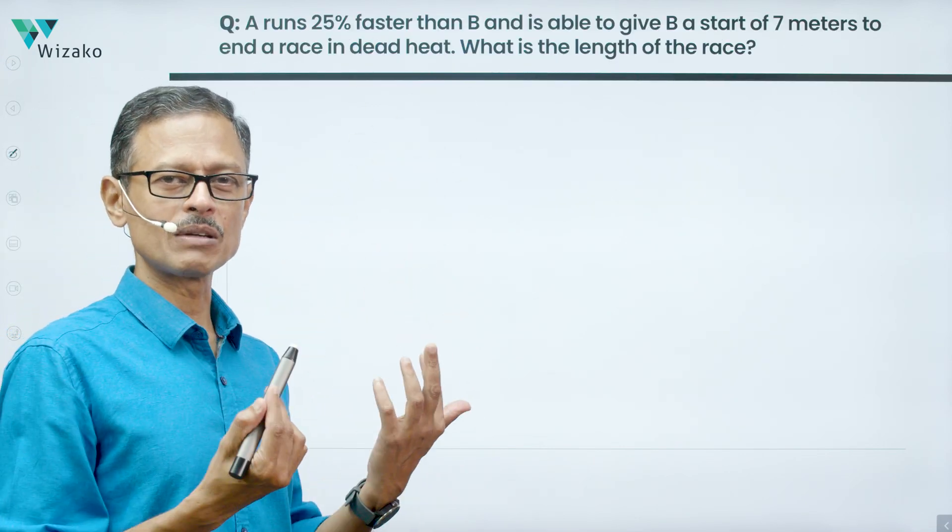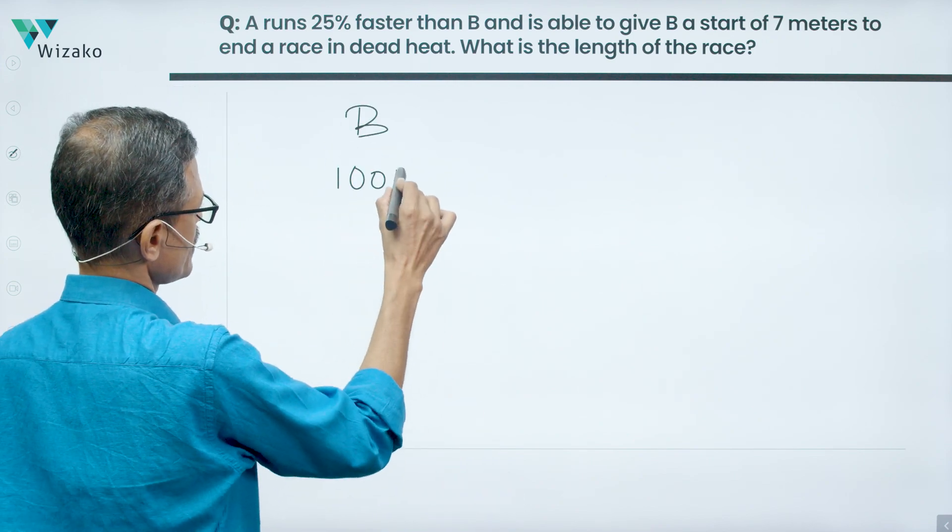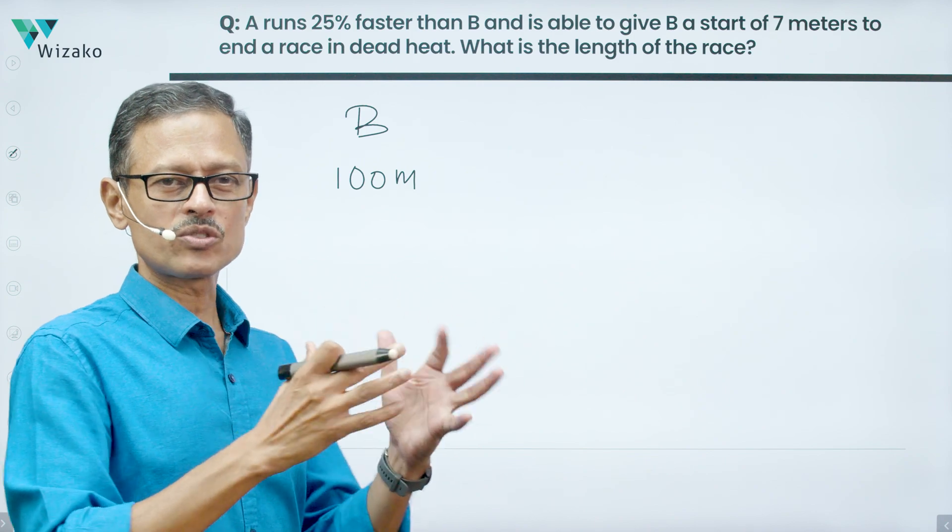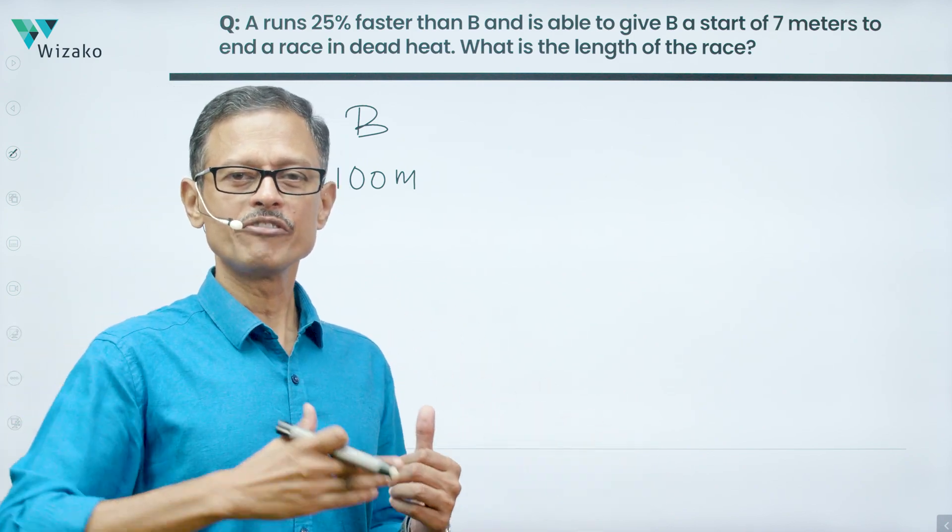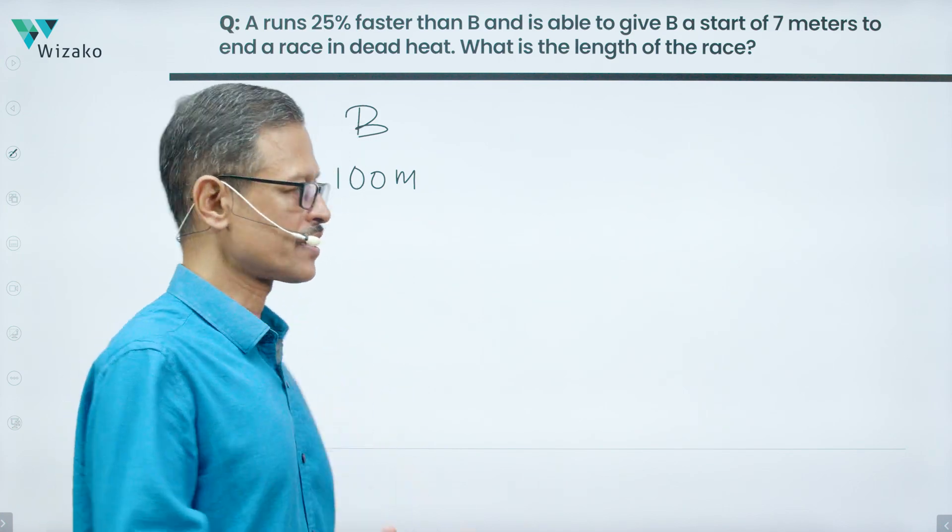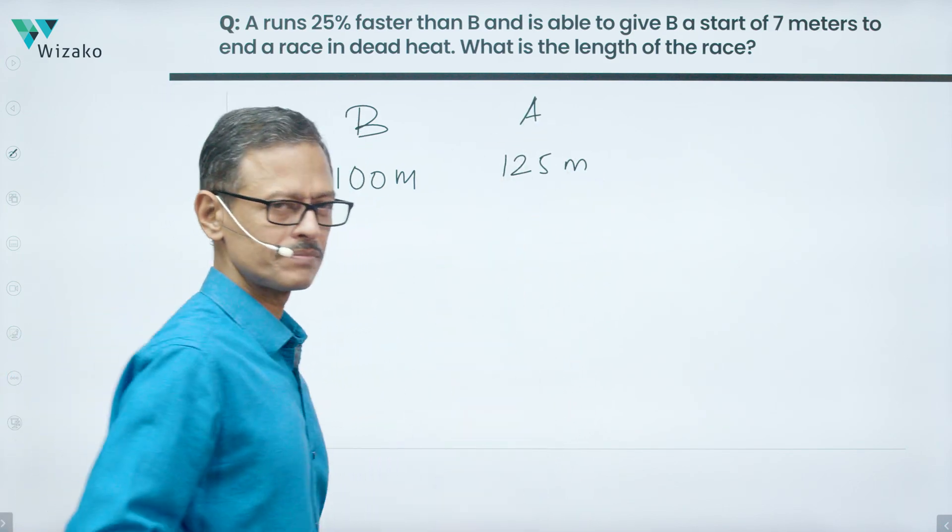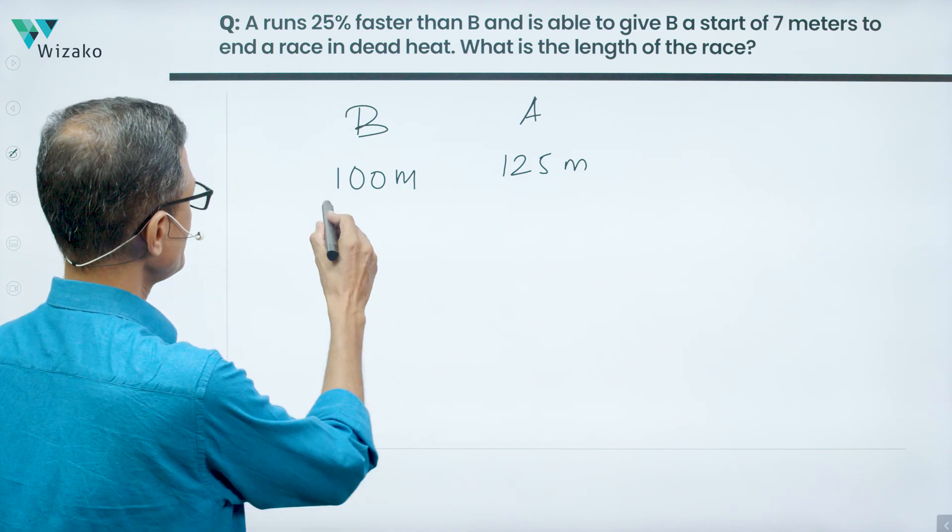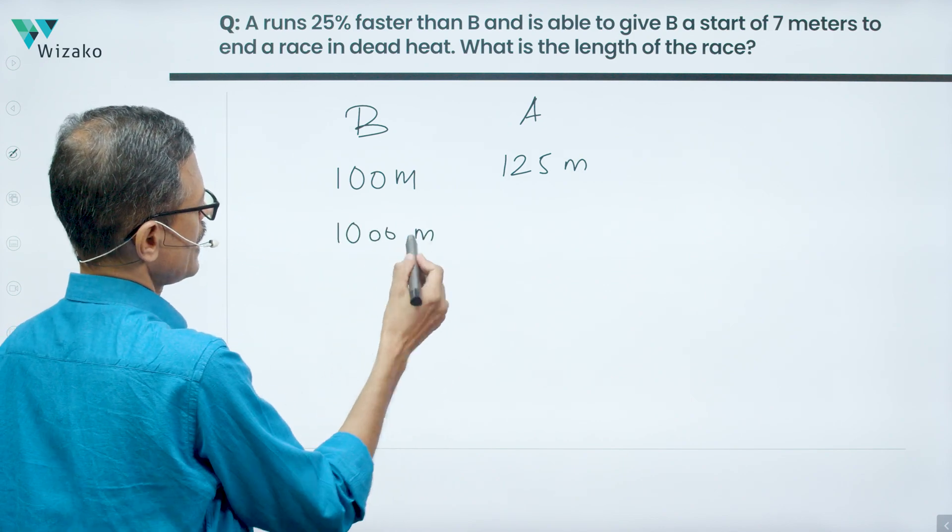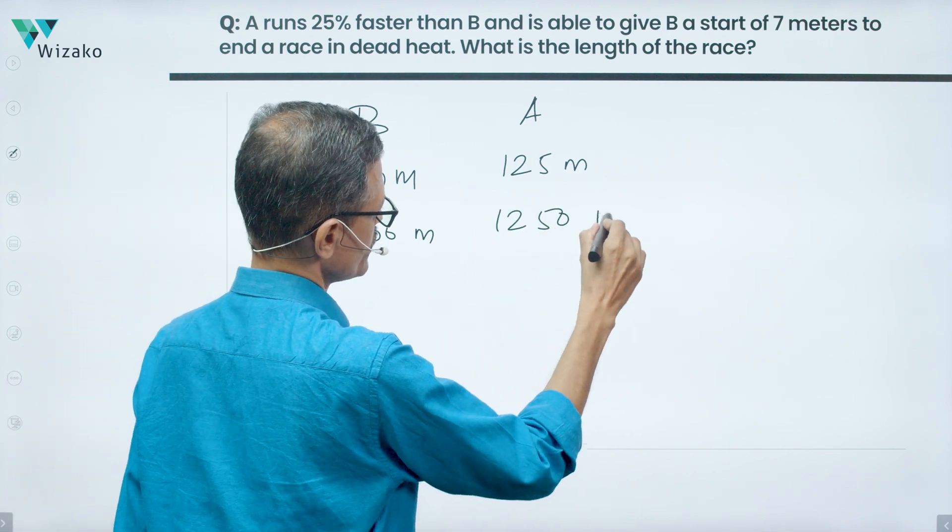A runs 25% faster than B. Let's start with numbers we're comfortable with when talking about percentages. Let's say B runs 100 meters. In the time that B takes to run 100 meters, A would cover 125 meters because A runs 25% faster. Same thing: if B were to run 1000 meters, at the same time A would run 1250 meters.